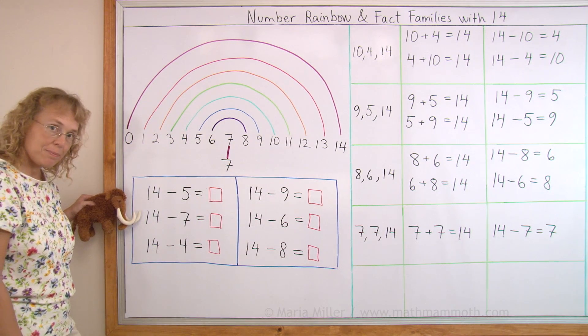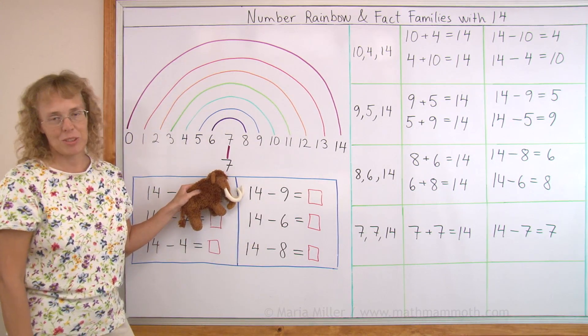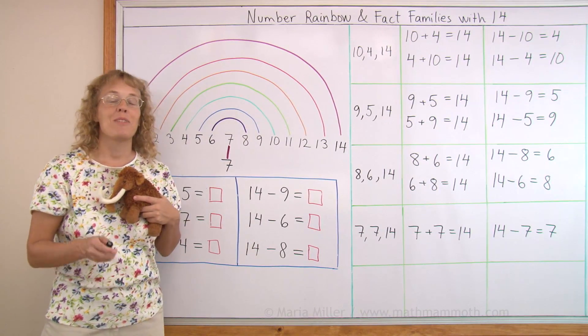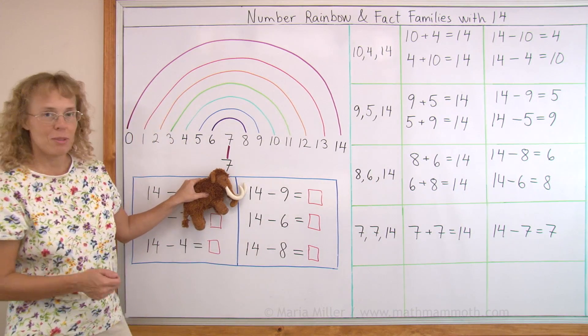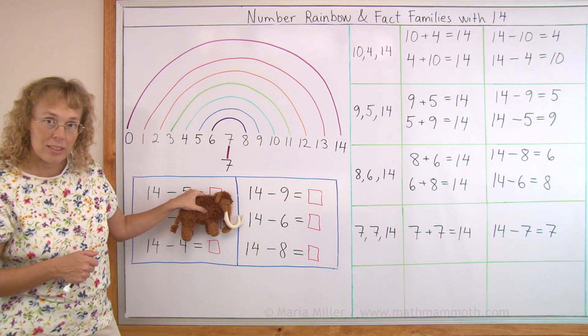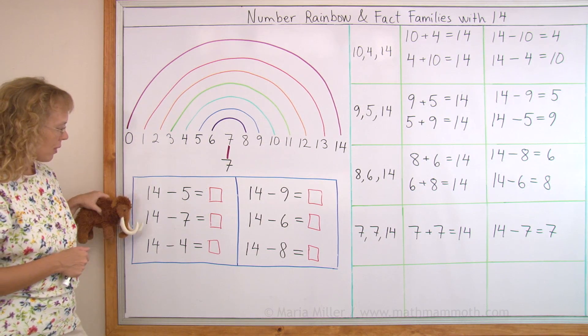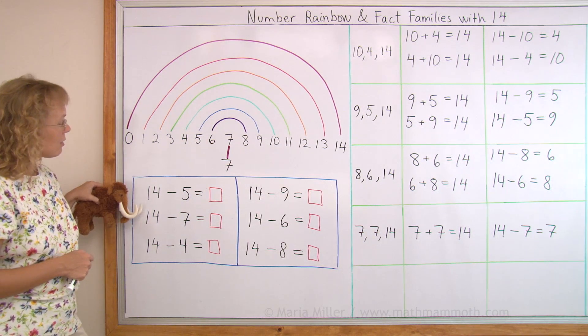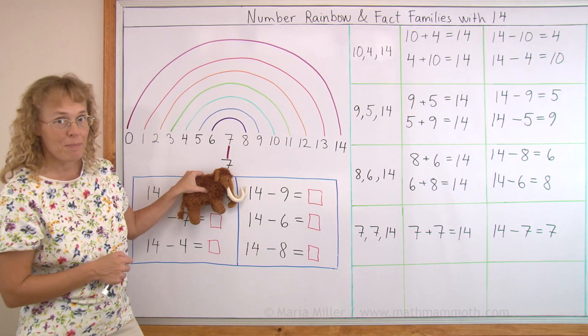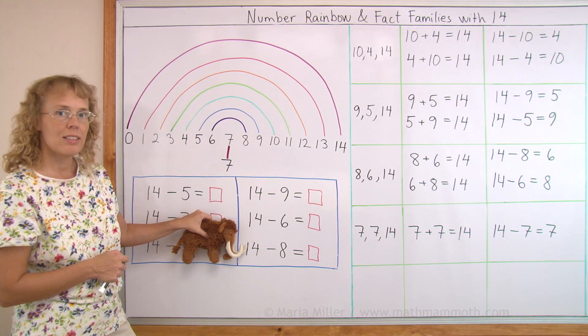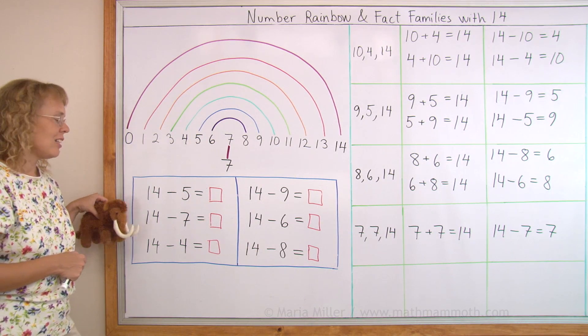14 minus 7, 14 minus 8, 14 minus 9, and one more time, faster. 14 minus 7, 14 minus 8, 14 minus 9, 14 minus 6, 14 minus 8, 14 minus 5, 14 minus 4, 14 minus 7, 14 minus 6, 14 minus 9, 14 minus 8, 14 minus 5, 14 minus 4, 14 minus 7.